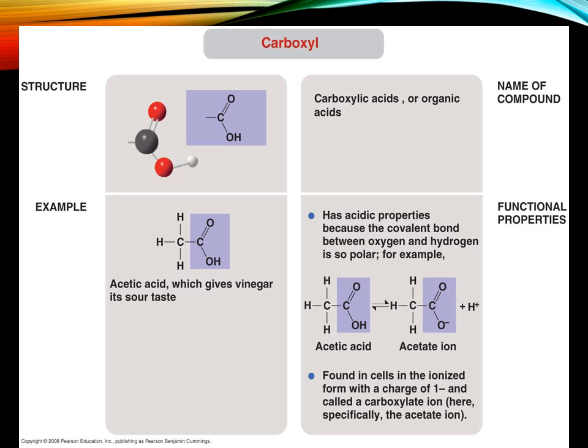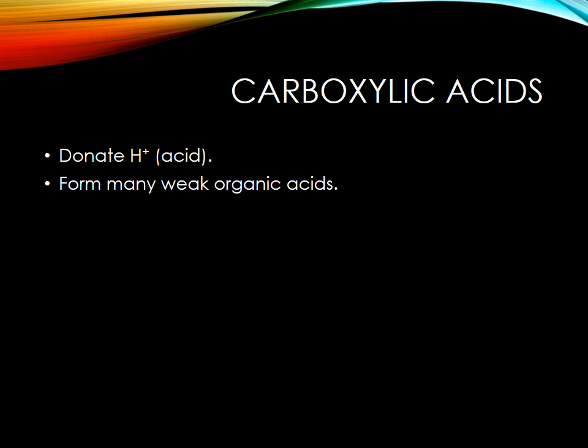The next group is a carboxyl, which is a carbon double bonded to an oxygen with a hydroxyl. It has acidic properties because it's very polar. It gives us things like acetic acid, which we know as vitamin C and vinegar. Carboxylic acids are a weak acid and they form many compounds.